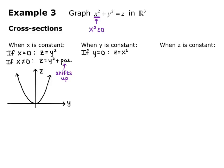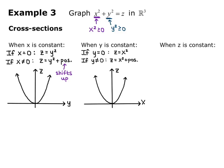When y is a constant, if y equals 0, we get z equals x squared. Since y squared is greater than or equal to 0, when y is not equal to 0, z equals x squared plus a positive number. So again we have a parabola in the xz plane, and the positive term shifts it up.